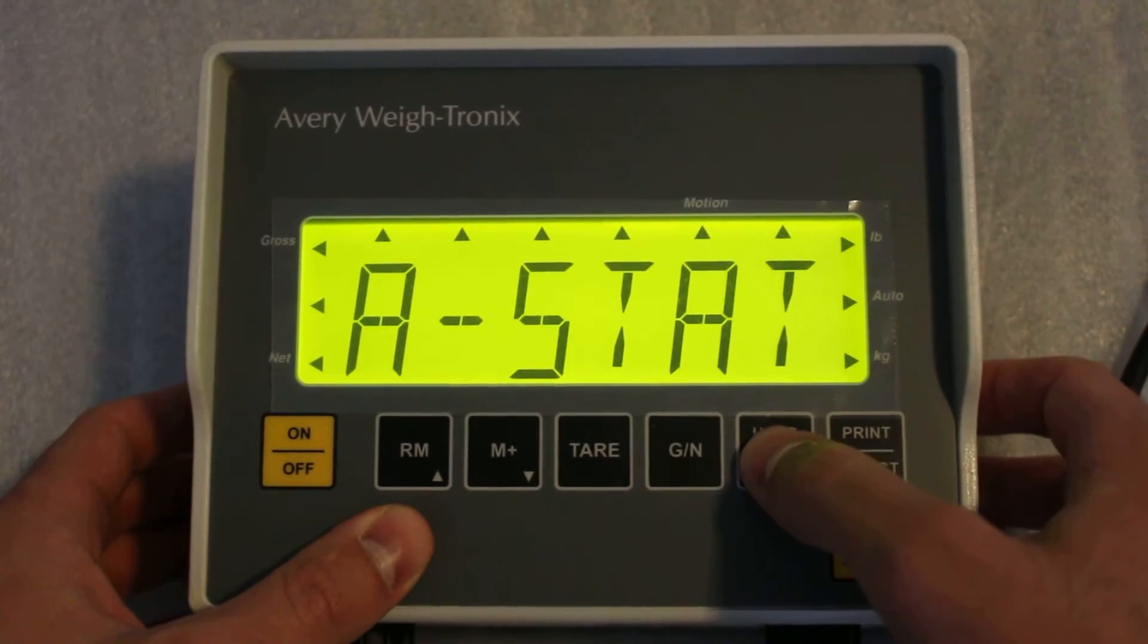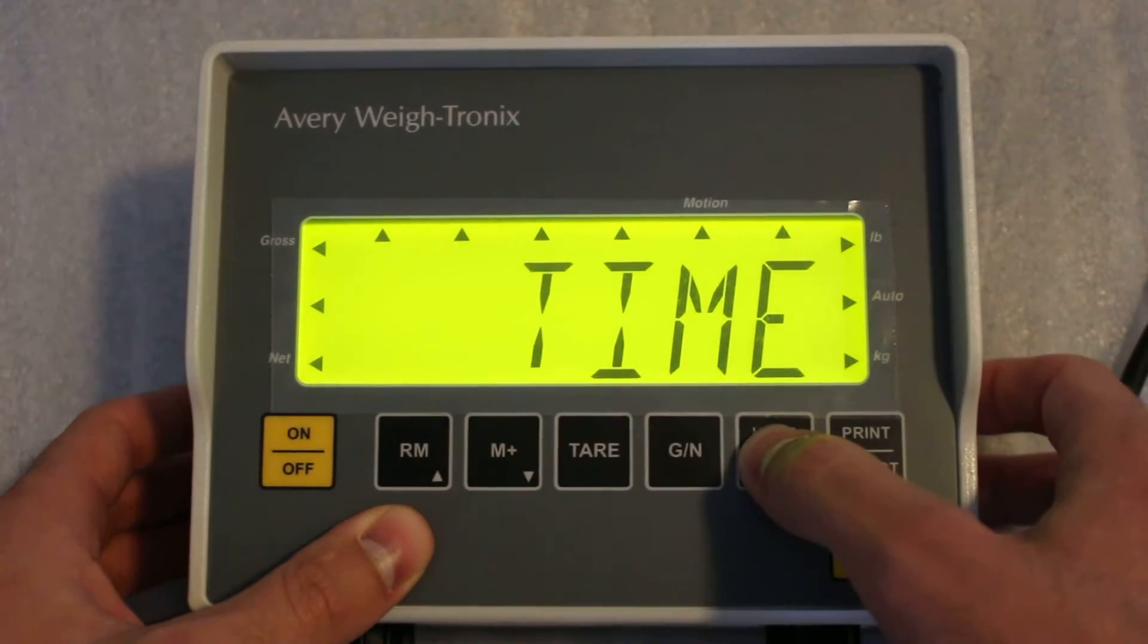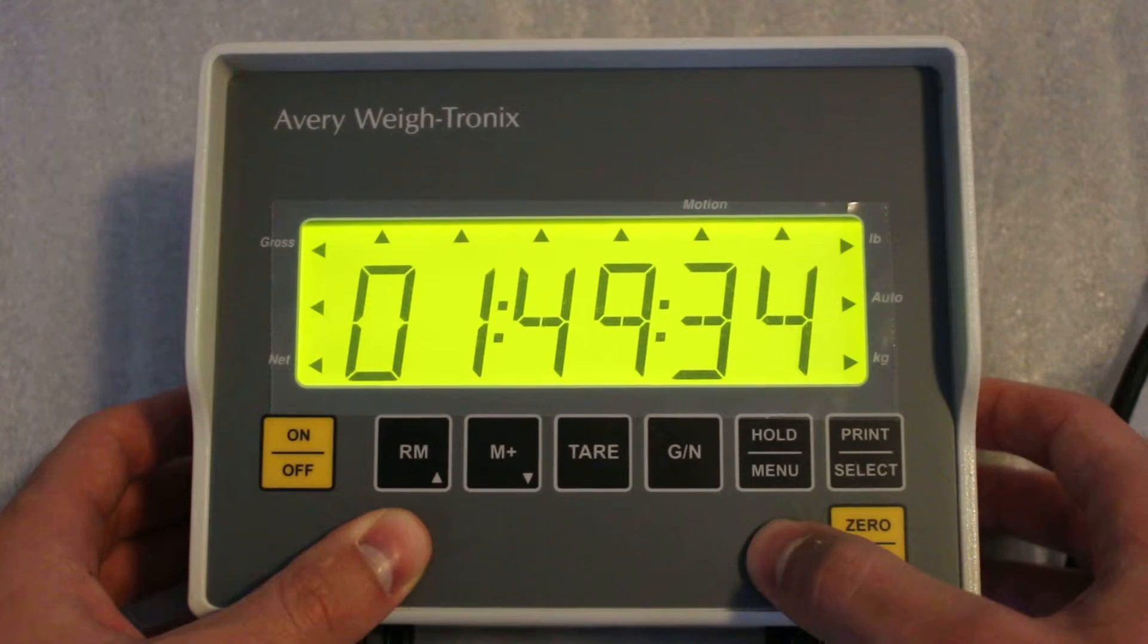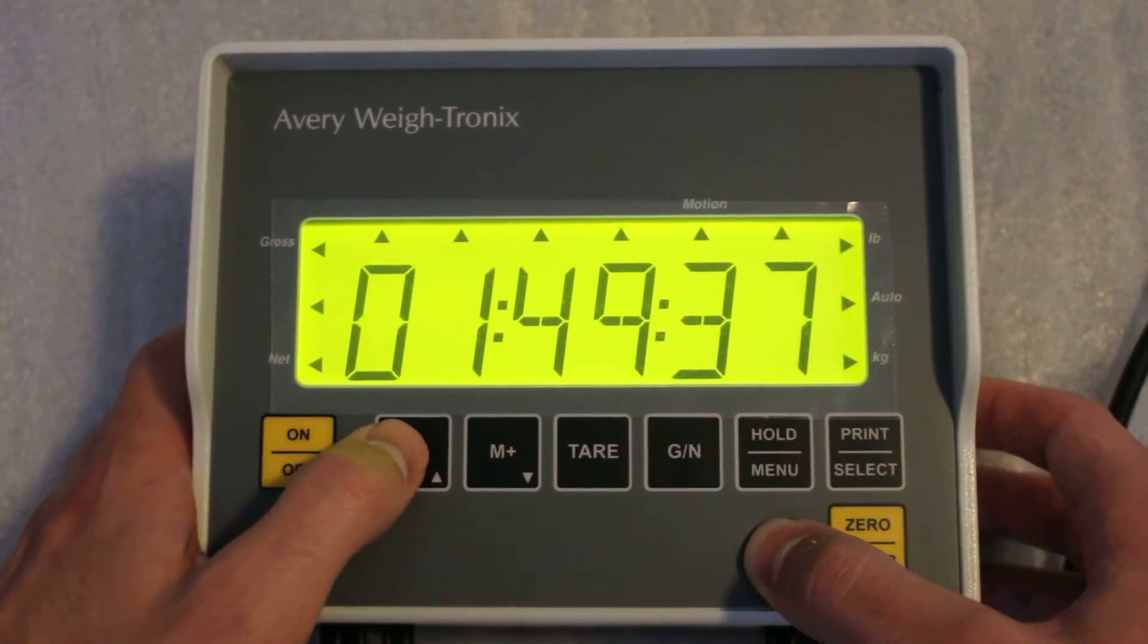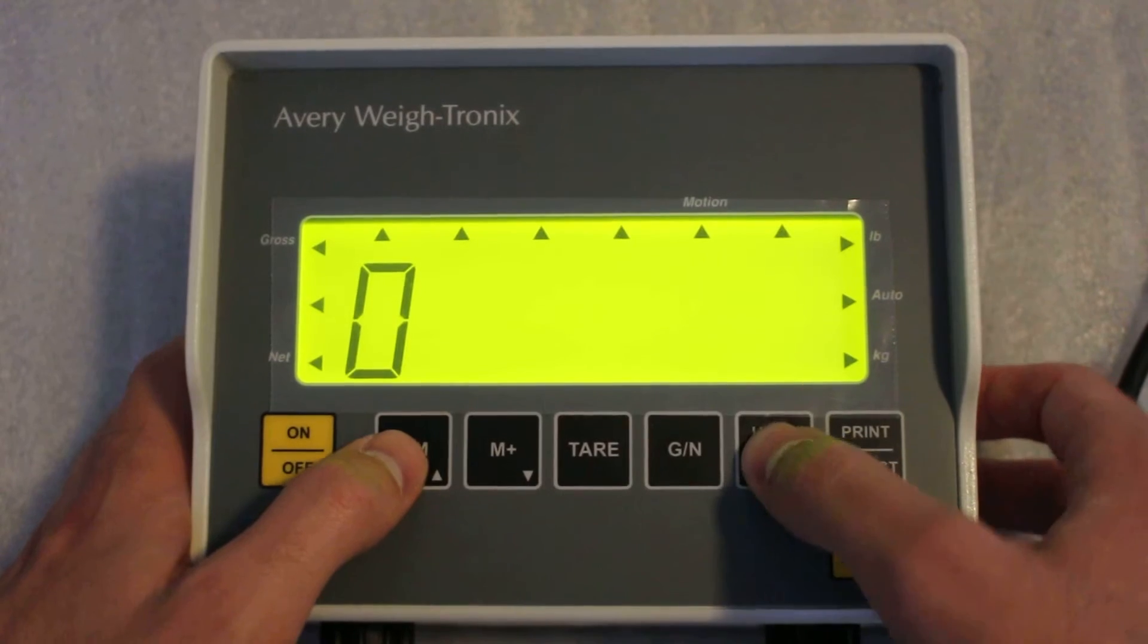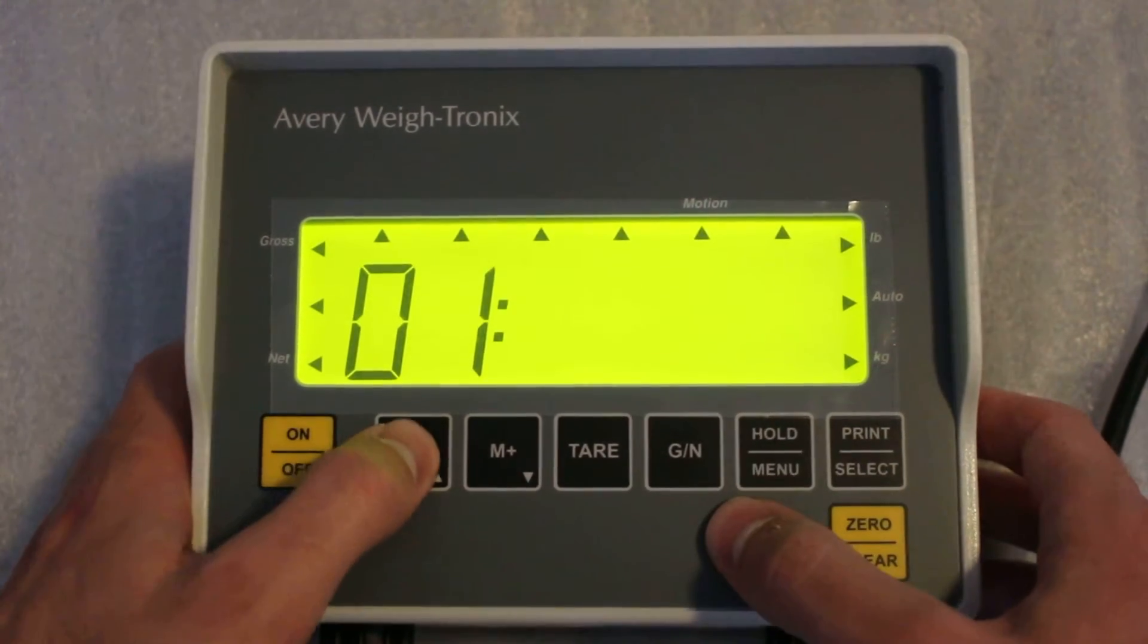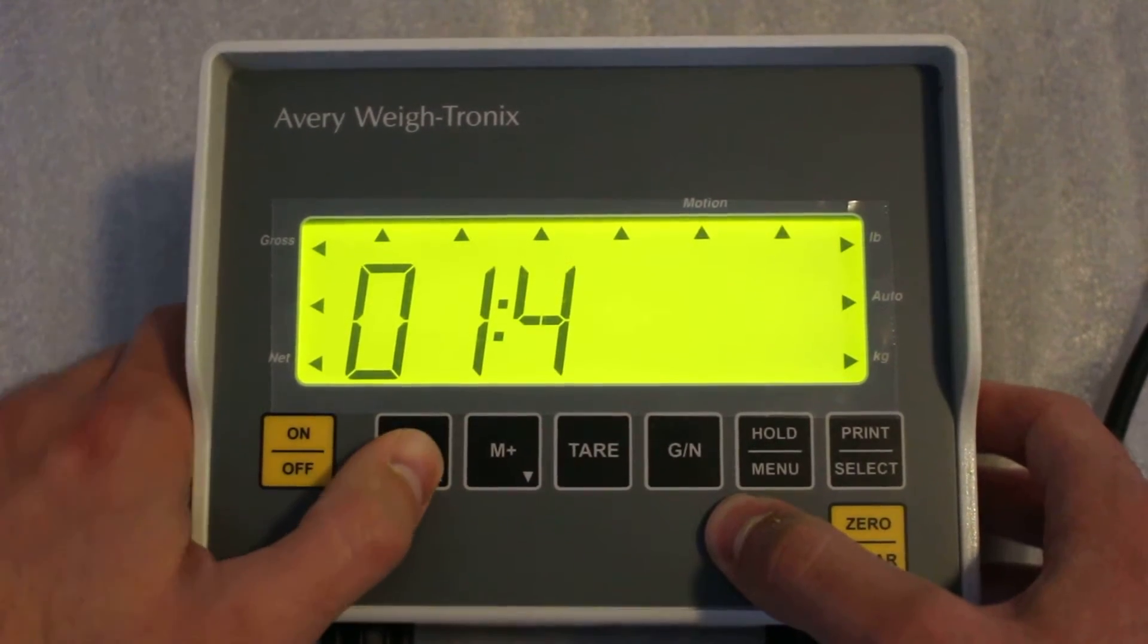And then menu until you get to time, push print select, and then you can change that. We already have the correct time in there, but I'll just go ahead and adjust it again.